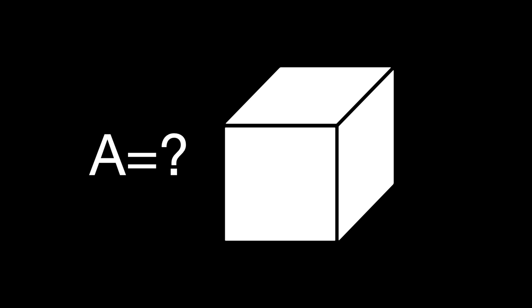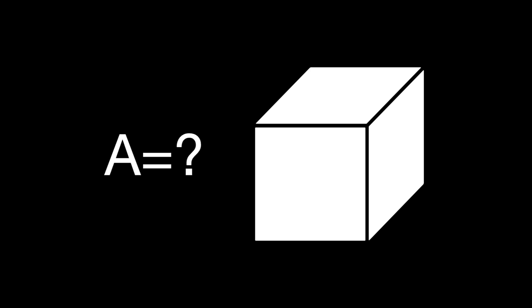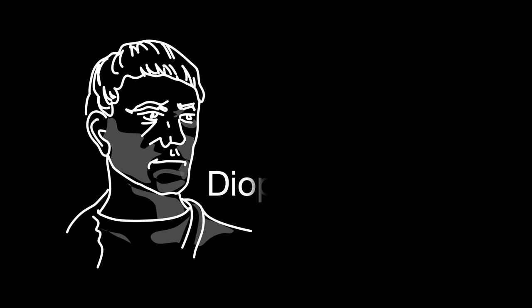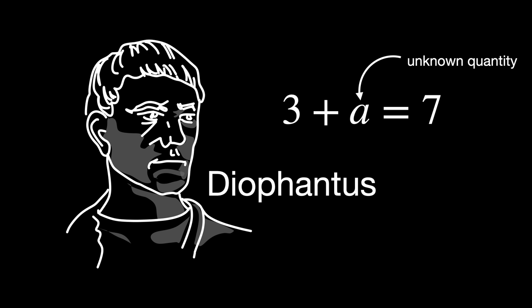As mathematics developed over time and became more complex, Greek scholars like Diophantos developed new methods. Diophantos was the first mathematician to use symbols for quantities which are unknown, but it would take another thousand years for standard algebraic notations to become the norm.